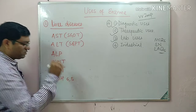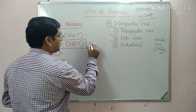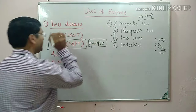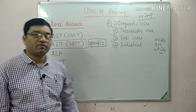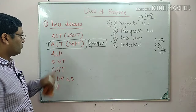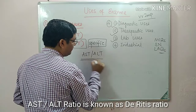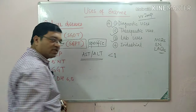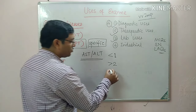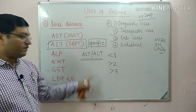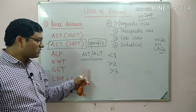ALT is more specific for liver disease compared to AST because the concentration of ALT increases only in liver diseases. The AST/ALT ratio is important: if it is less than one it indicates liver disease, if it is more than two it is suggestive of alcoholic liver disease, and if the ratio is more than three it is indicative of alcoholic liver disease. In cirrhosis of the liver, the ratio is nearer to one.